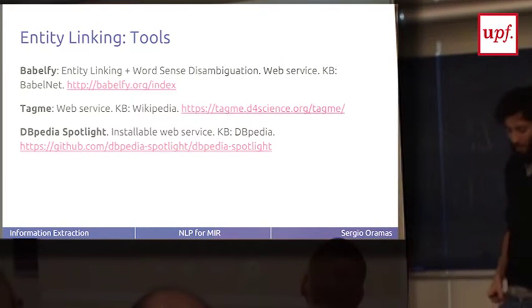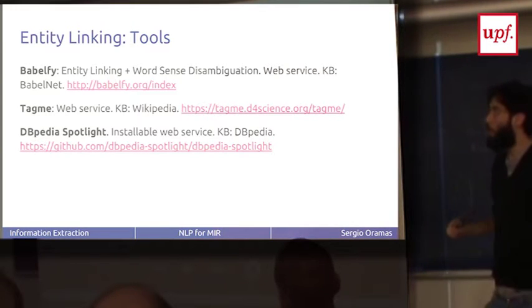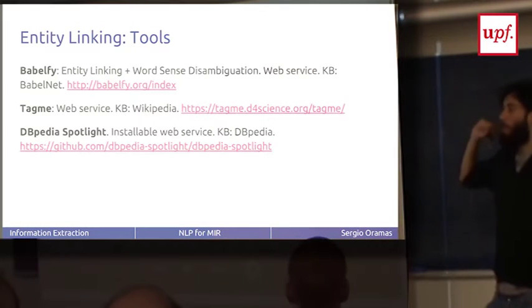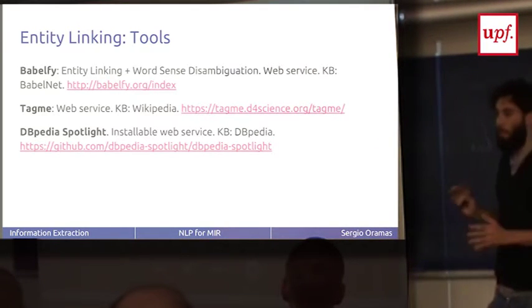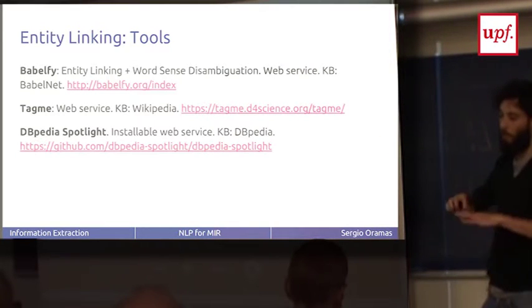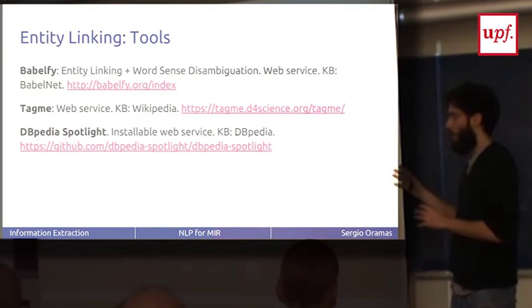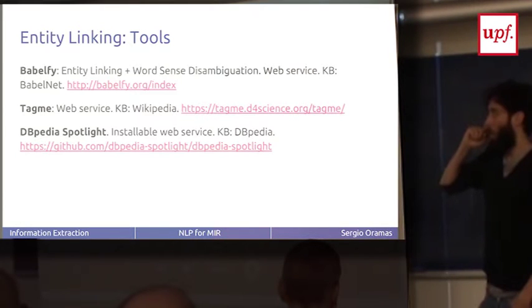These tools are some of the many entity linking tools available. Babelfy is very interesting - it maps entities to BabelNet. BabelNet, as Luis explained before, has Wikipedia and also has WordNet. So Babelfy is able to do two things: entity linking and also word sense disambiguation. It can find entities in Wikipedia and disambiguate words to WordNet. You have an API key limit to deal with. Tagme is another service that does disambiguation of entities to Wikipedia. And DBpedia Spotlight is the original entity linking system that works with Wikipedia. DBpedia is a structured form of Wikipedia. The good thing is that you can install it locally and run without an internet connection.